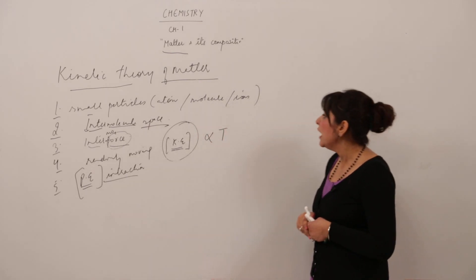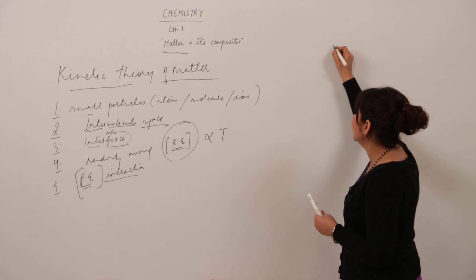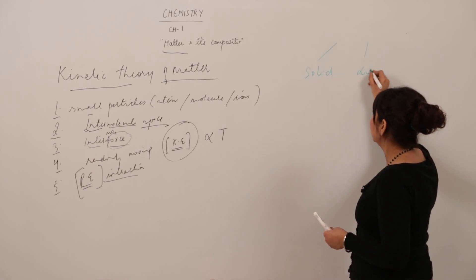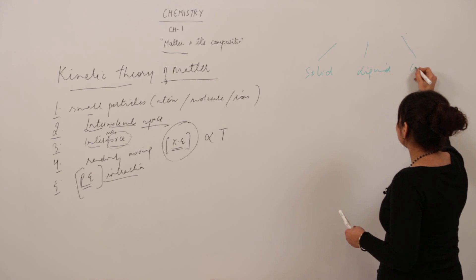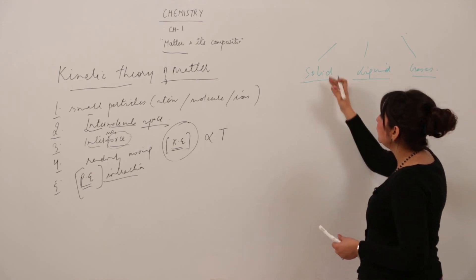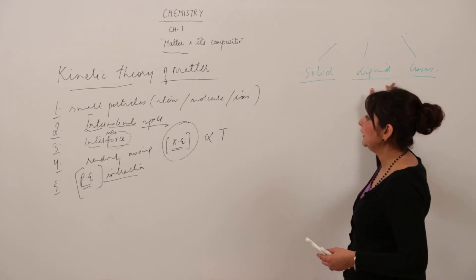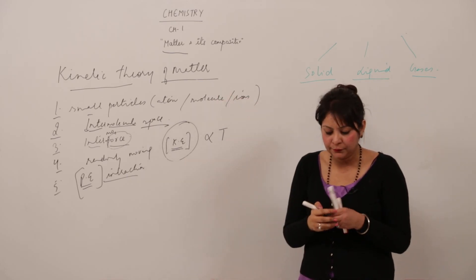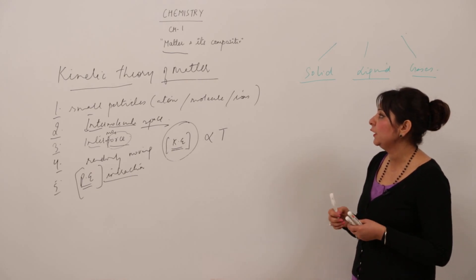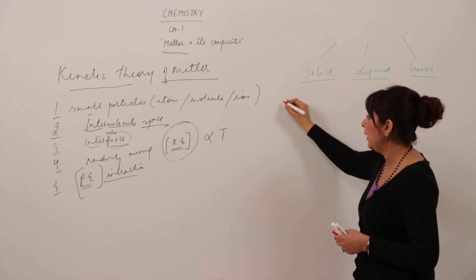As we know, matter exists in three states: solid, liquid, and gas. We can explain the physical nature of solid, liquid, and gas on the basis of kinetic theory of matter. So now let's look at the explanation of solid, liquid, and gas on the basis of kinetic theory of matter.